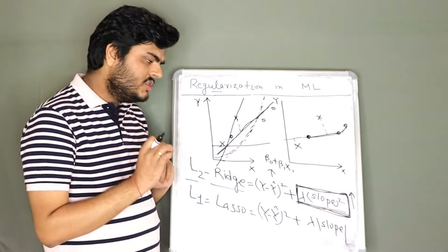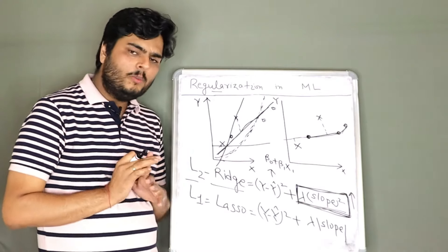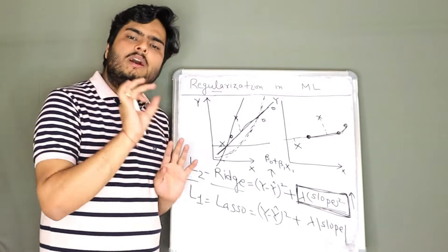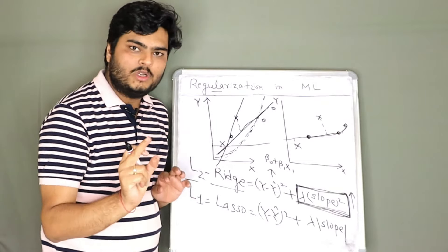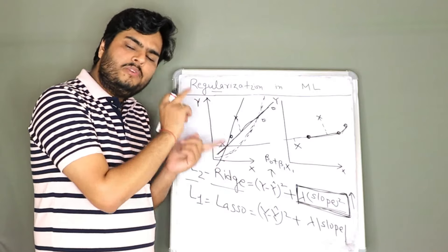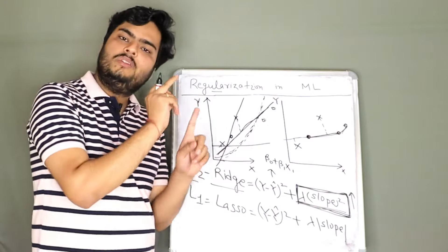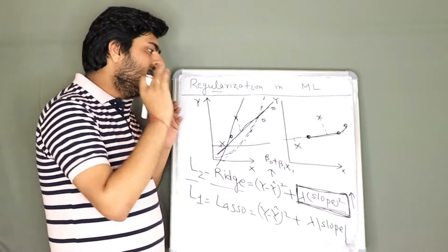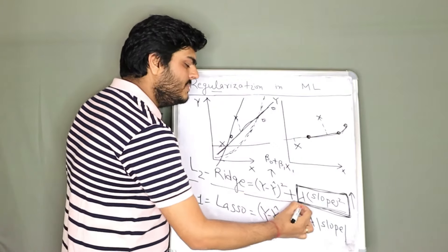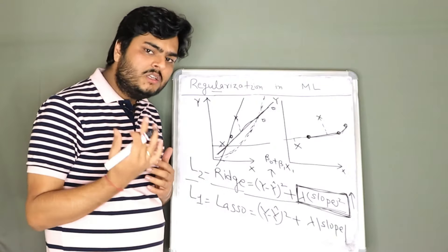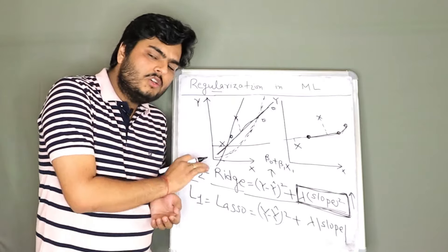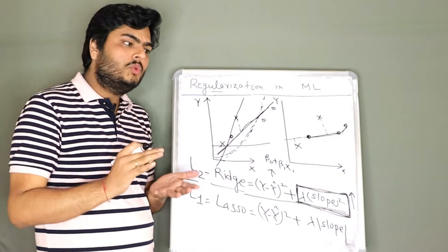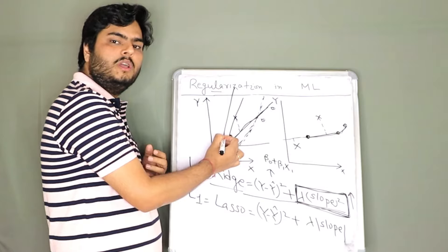Lambda is again a hyperparameter to tune. The purpose remains the same in Lasso as well — shrinking the coefficients. By how much depends on your data, your optimal lambda, and your optimal coefficient value. The purpose of the entire exercise is to regularize the model to find that sweet spot. There are slight differences between L1 and L2 regularization which I will cover in the next video.